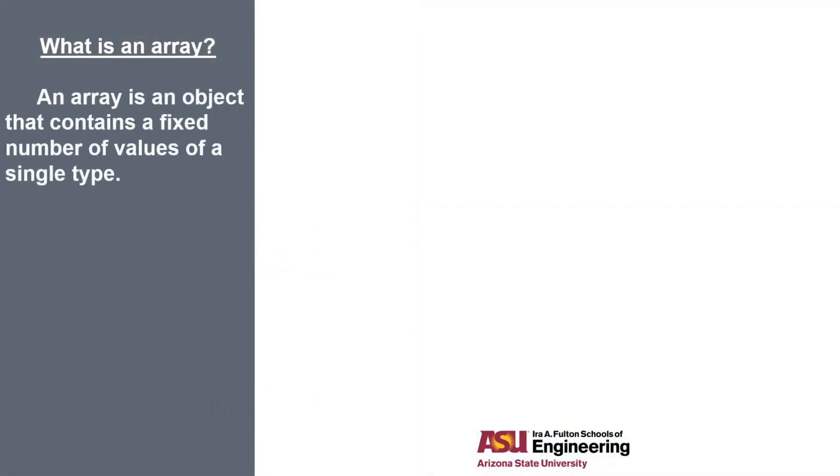What is an array? An array is an object that contains a fixed number of values of a single type. So you've probably learned how to create a variable for a single integer. In this case we've created a variable called oneNumber, its type is int, and the value associated with it is 7.